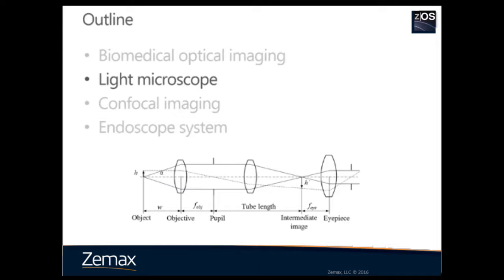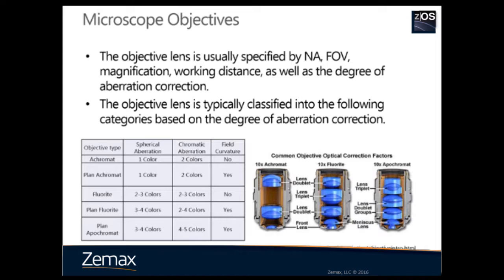Now let's discuss light microscopy with some ZEMAX examples. Microscopy is the most common optical system in biomedical imaging. While the microscope was invented 400 years ago, the principle is the same. The main difference between modern and traditional microscopes is the objective. Modern objectives are infinity-conjugate, meaning the image plane is at infinity, so we need a tube lens to focus the image into the intermediate image plane for cameras. To design an objective, we need to know the numerical aperture, field of view, working distance, and degree of aberration correction. Objectives are grouped into categories based on correction of spherical aberration, chromatic aberration, and field curvature.